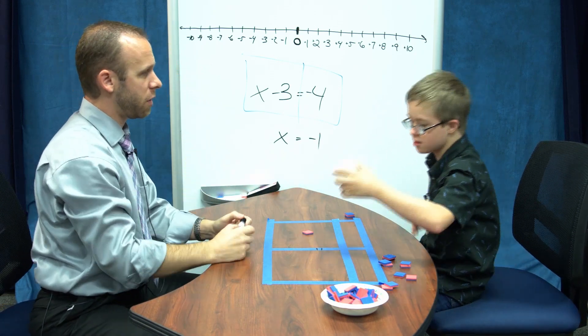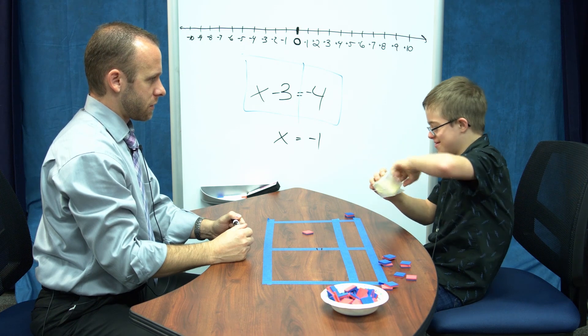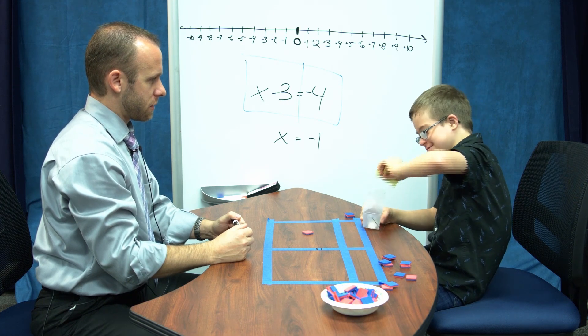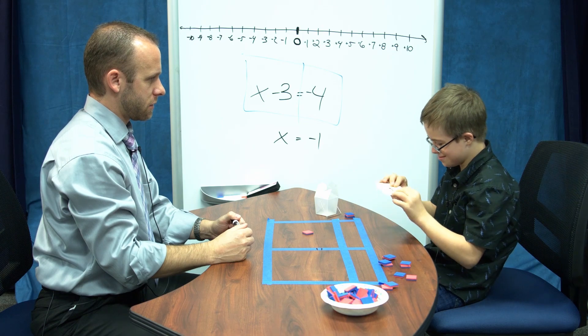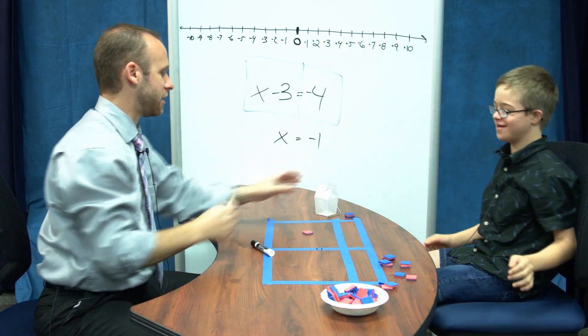So x is supposed to be equal to negative 1. Let's check. Is x equal to negative 1? What is that? Negative 1. You got it, buddy. Nice job. Let's reset.